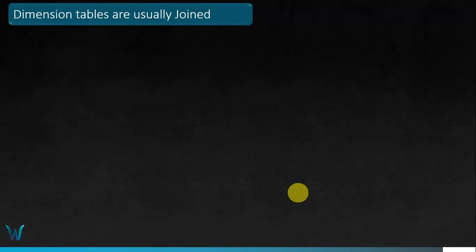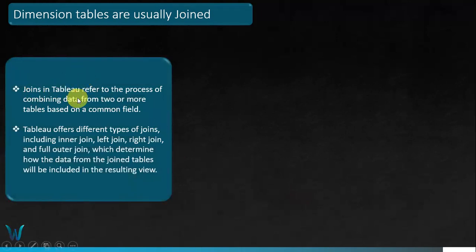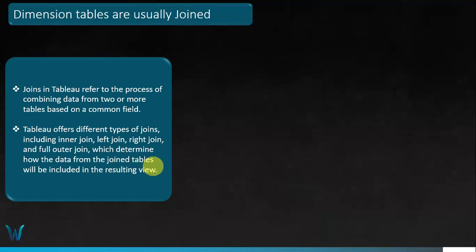Dimension tables describe the facts — answering questions like who, what, and where an order was made. In Tableau, joins refer to combining data from two or more tables based on a common field. Tableau offers different kinds of joins: inner join, left join, right join, and full outer join, which determine how data from the tables is included in the resulting view. We'll also go through examples of these in the next lesson.